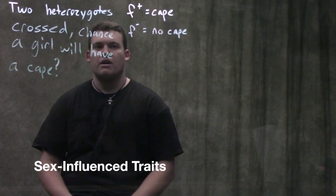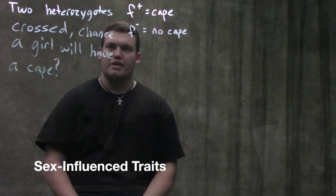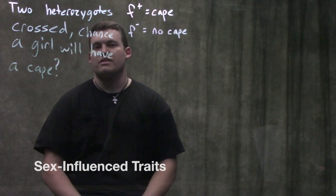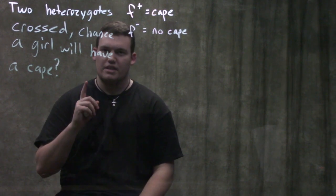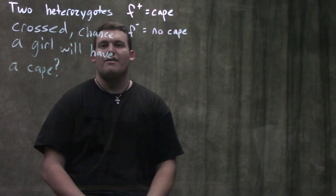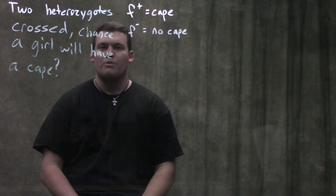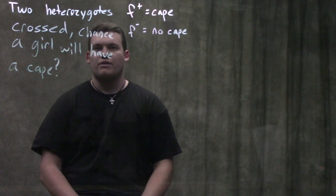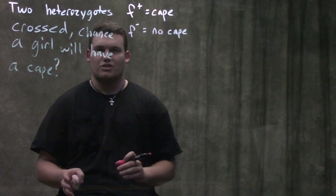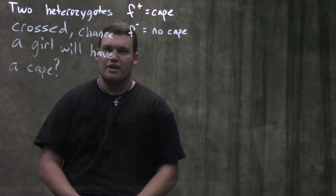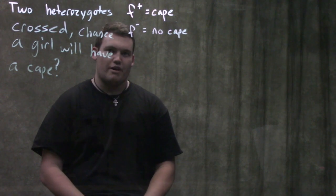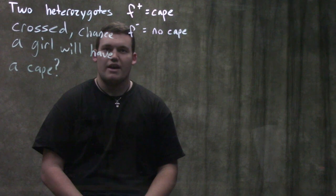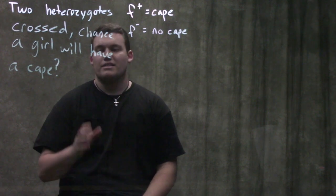In this video we're going to be talking about sex-influenced traits. Last video we talked about sex-limited traits; this one's going to be about sex-influenced traits. Just like sex-limited traits, they're inherited on autosomes, so we're not going to worry about who has the X chromosome or the Y chromosome. Whether or not you show the trait is going to depend on what sex you have.